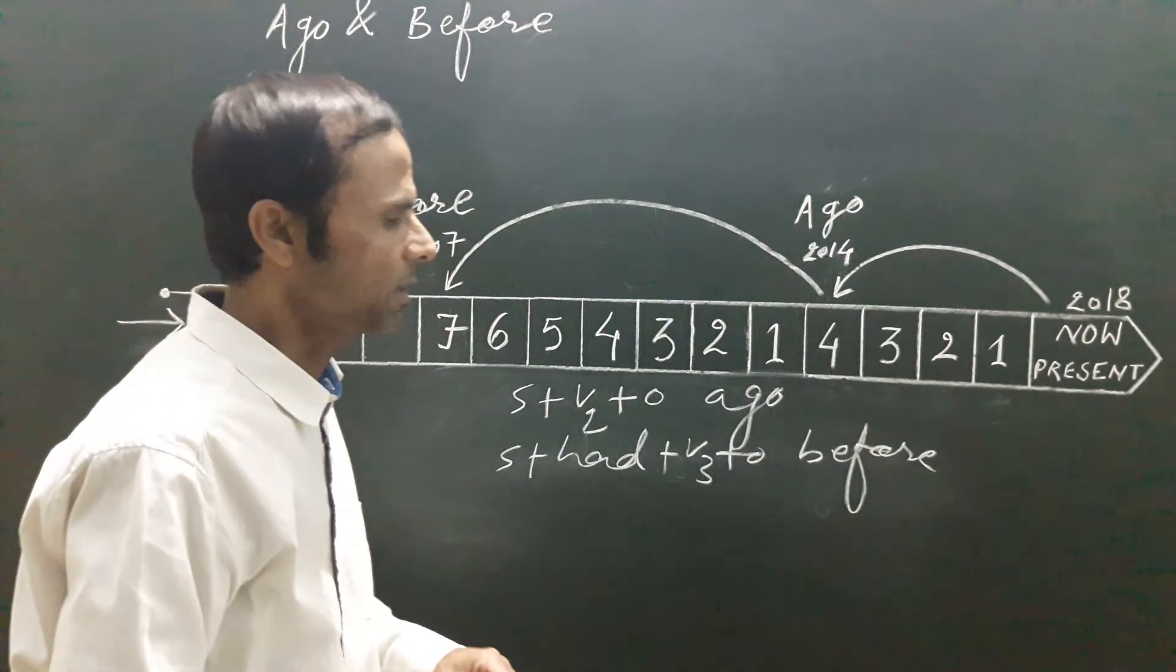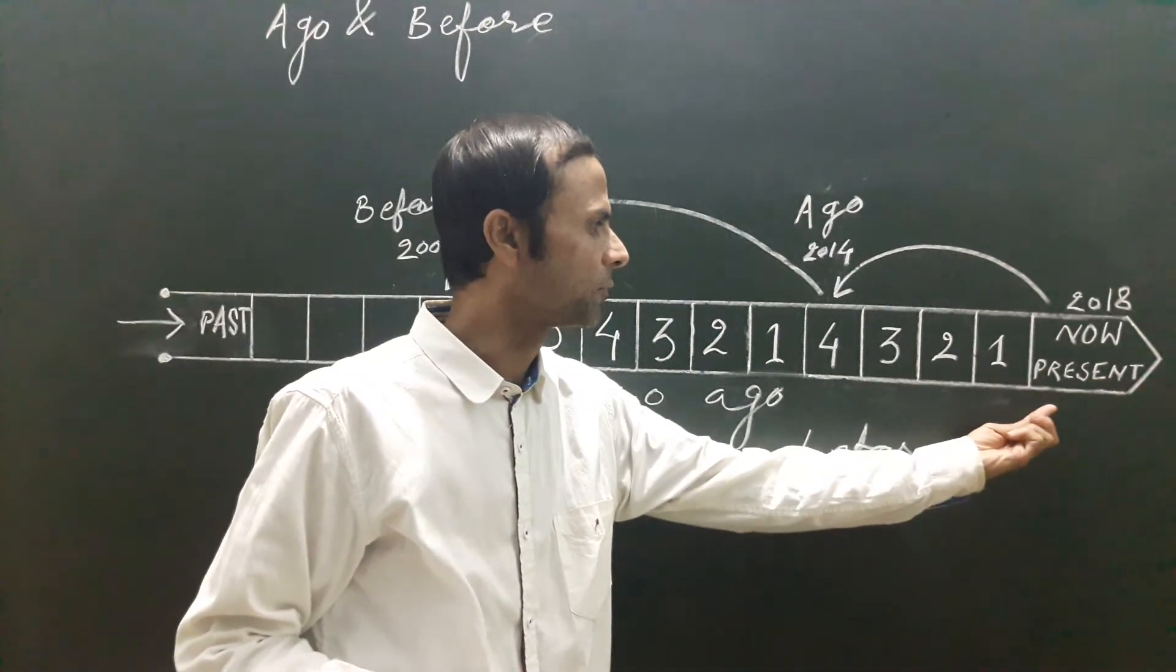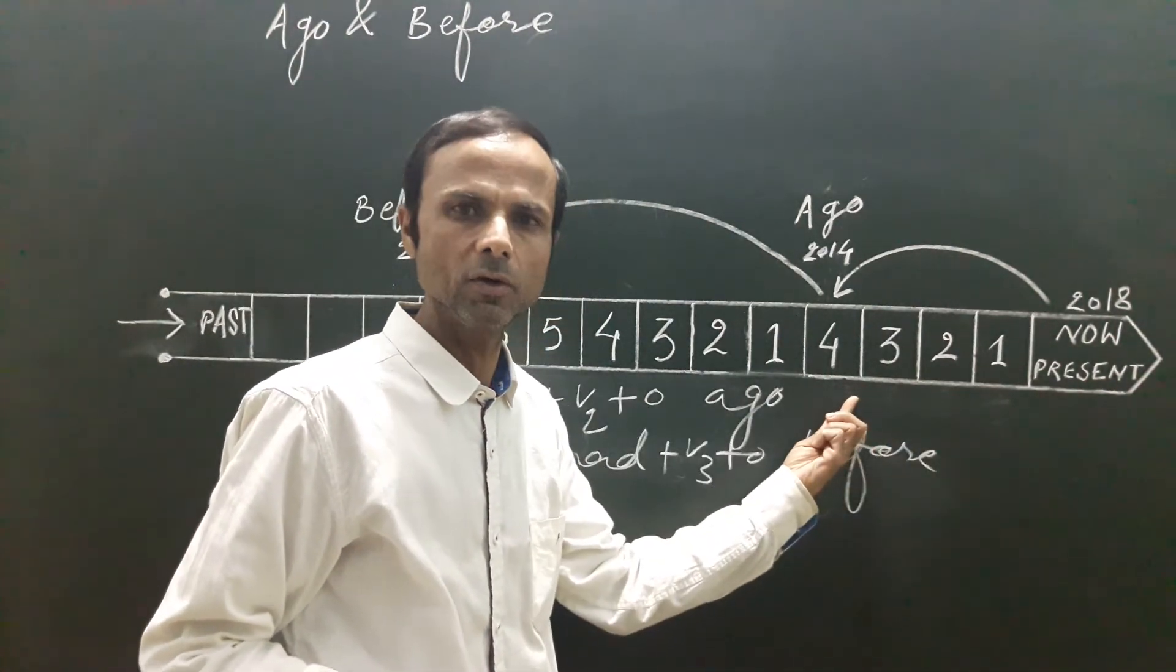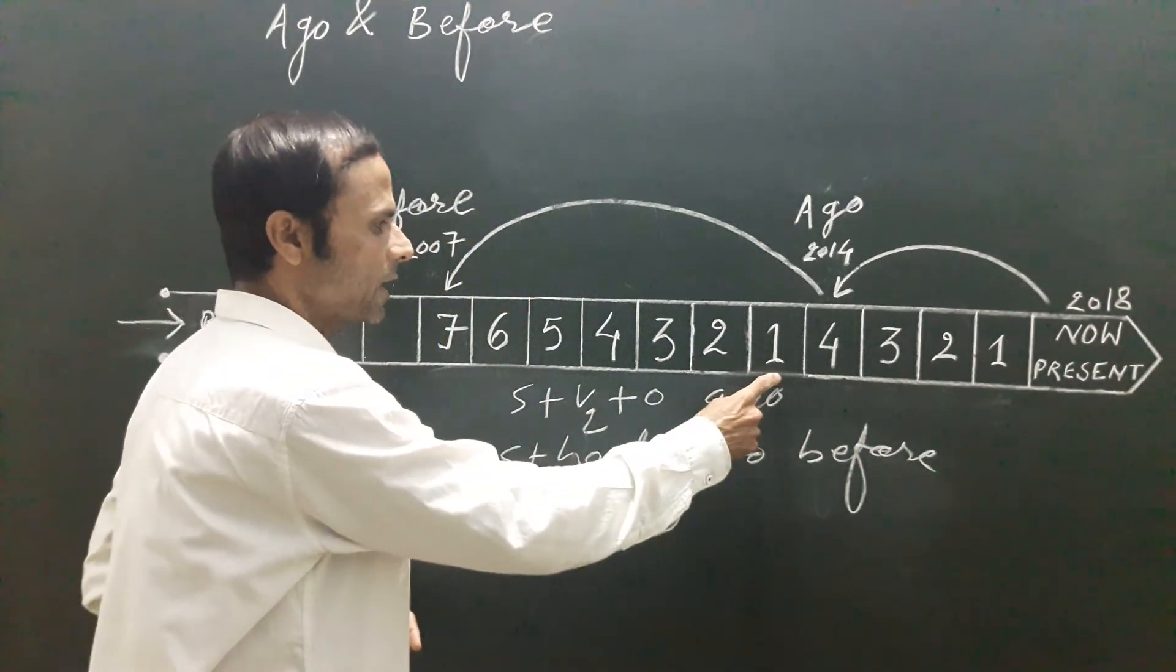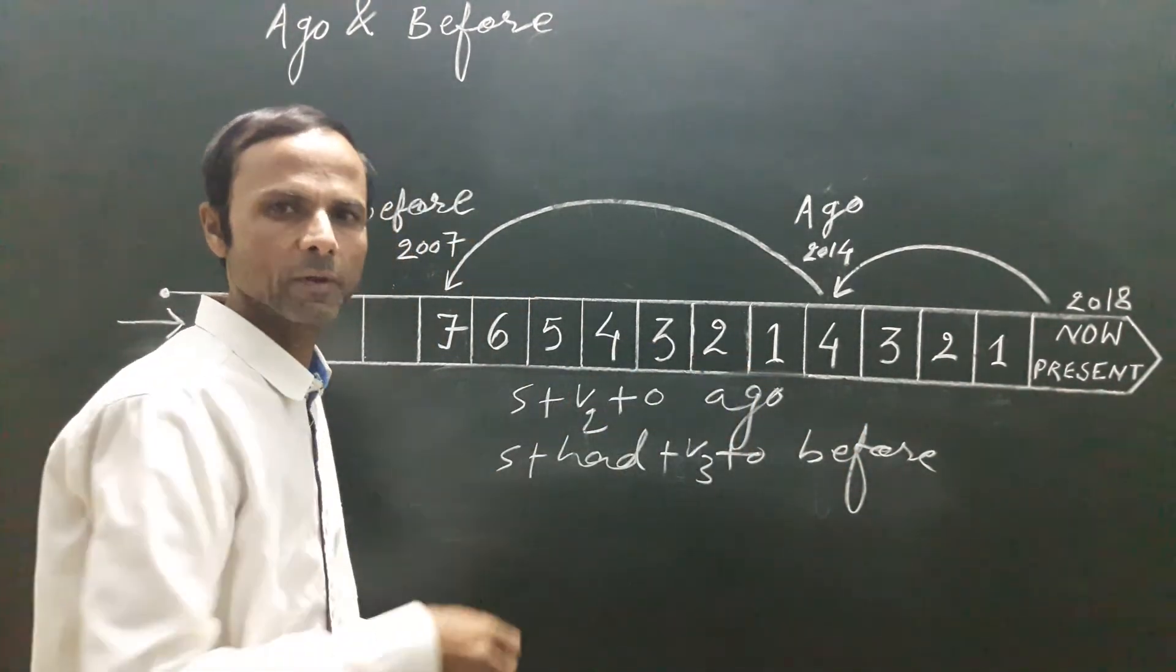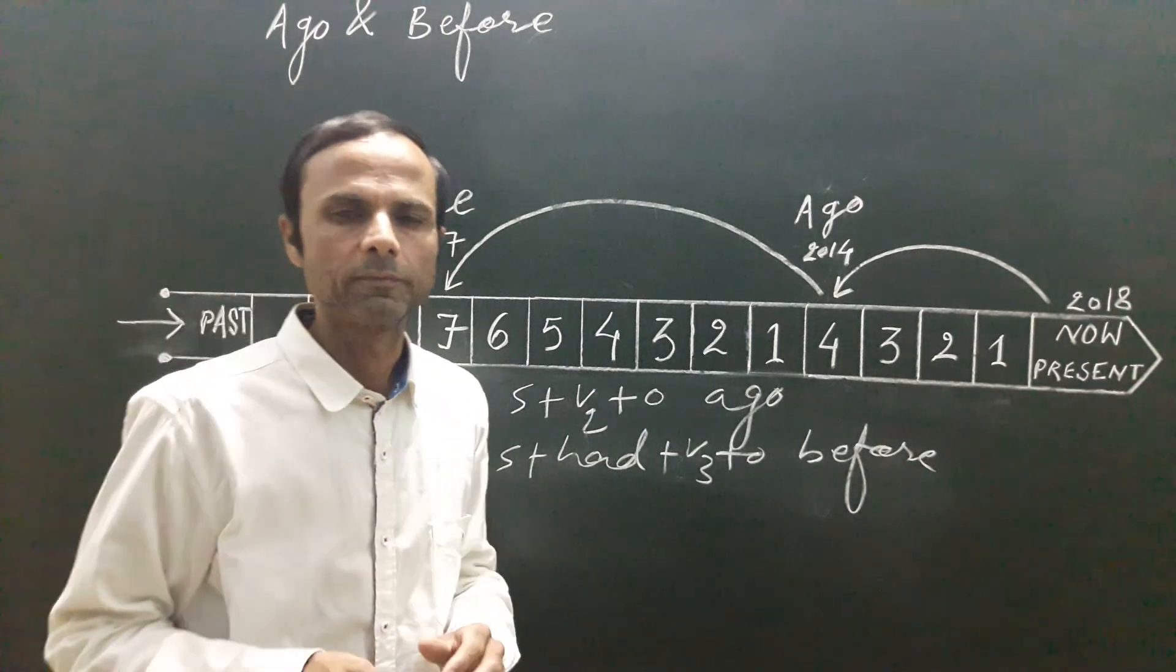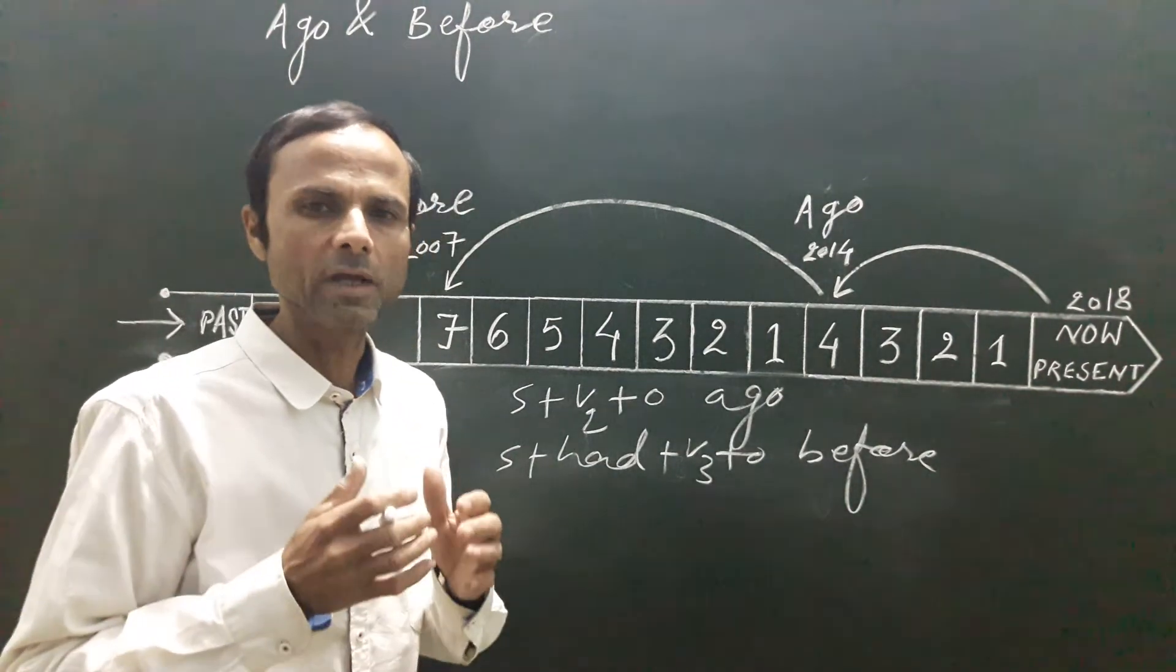So if we count back from present to past, we use ago. If we count back from past to past, we use before. I hope the point is absolutely clear.